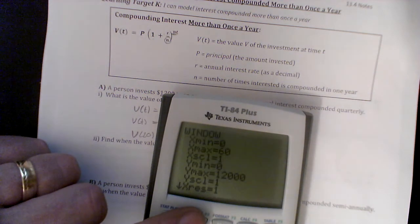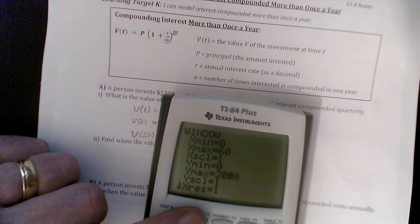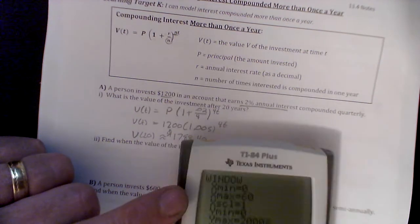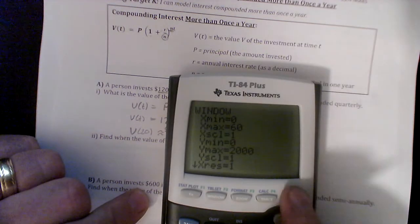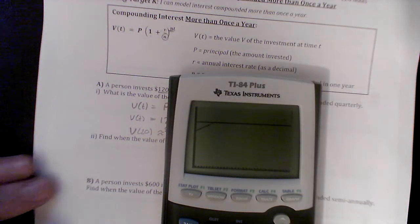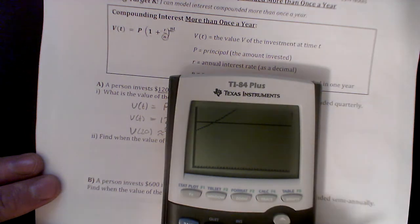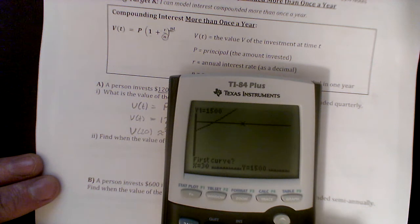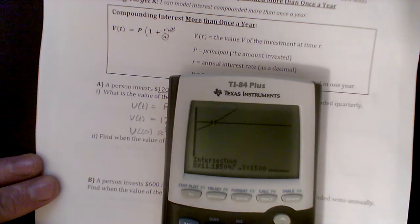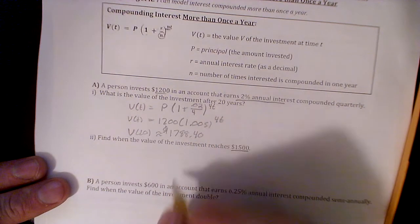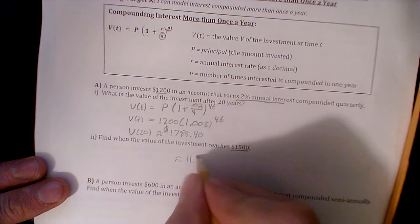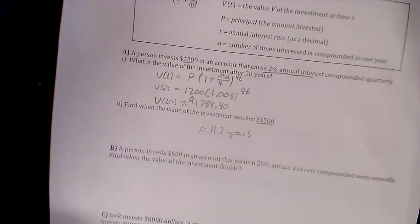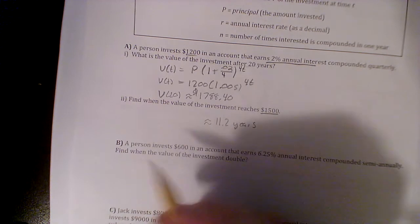Well, maybe I should change my window. It's really small in there. Let's change our window. Let's make our Y-max like 2000. Graph it now, there it is. Let's see when we touch. Pretty early. Second calc, intersect to find out how many years. Second curve. It looks like about 11.2 years. Alright, definitely shorter than 20 years. So approximately 11.2 years.